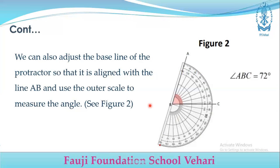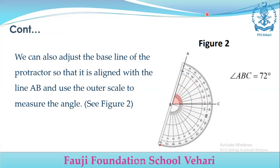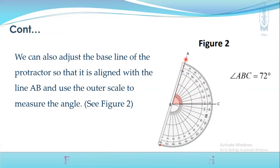If you want to measure the angle with the outer scale, you put the protractor so that A — which is the end point — B is placed at the center of the protractor. When you set the protractor on the line, the outer scale should read zero. Reading the outer scale, the angle is also 72 degrees. You can use either the outer scale or the inner scale.